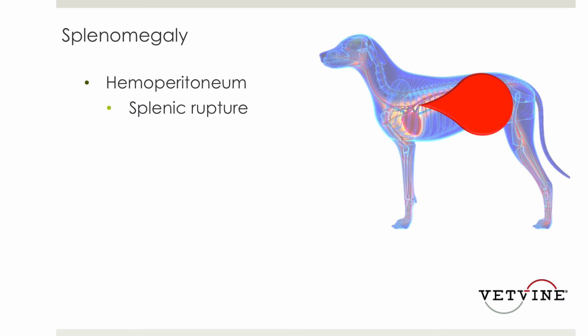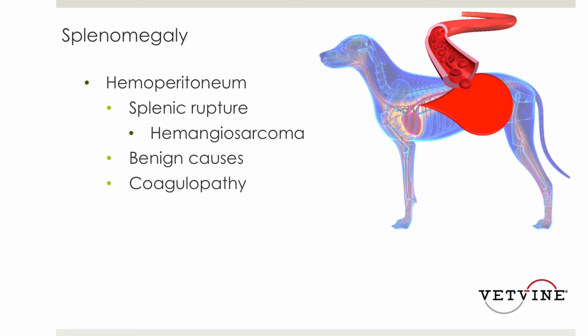Most commonly, this would be due to hemangiosarcoma. However, benign processes are also associated with hemoperitoneum. Coagulopathies certainly can cause hemoperitoneum, and those can be associated with splenomegaly, so it's very important to make that distinction. Hematomas that occur when dogs have coagulopathies can appear as masses, and so that is a very important distinction.